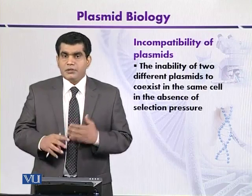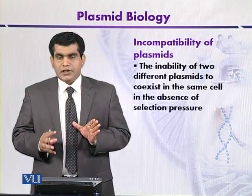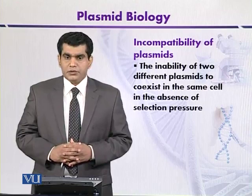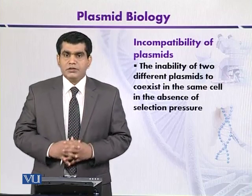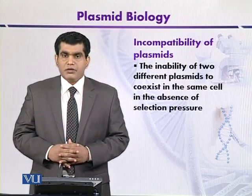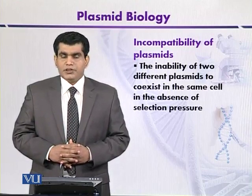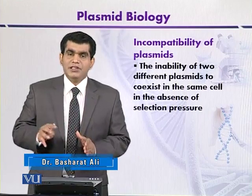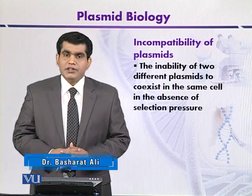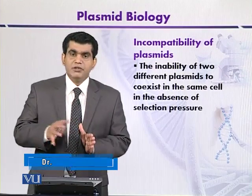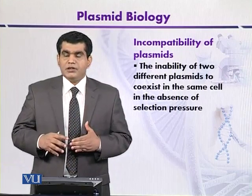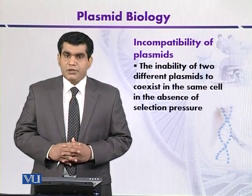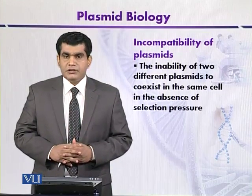Incompatibility ko determine karne ke liye yeh zaroori hai ke yeh dekha jaye ke joh doosra plasmid hai, woh cell ke andar introduce huwa hai ke nahi. Agar woh introduce huwa hai aur woh exist nahi kar saka, then we can say that they are incompatible. At the same time, it should not be degraded by the restriction endonucleases of the host — iski entry bhi zaroori hai aur yeh bhi dekha jaye ke it is not restricted. So then we can say that plasmid incompatibility is there.